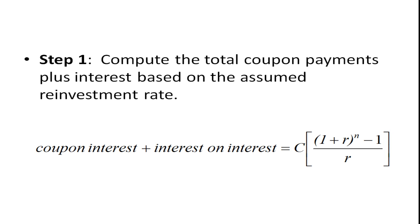then we have the coupon interest plus the interest on interest that you get. And so we use this future value for an annuity formula.